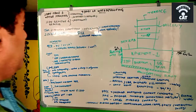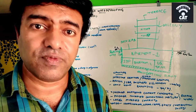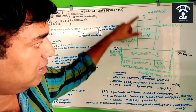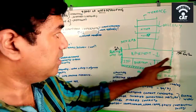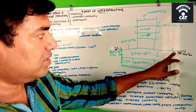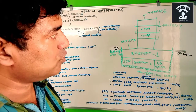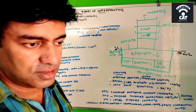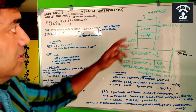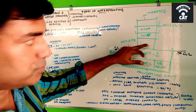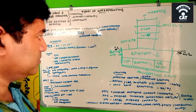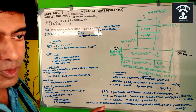Waterproofing treatment depends on the location where it is applied. Consider a building with a tower, deck, ground level, basement one, basement two, a sewage treatment plant, an underground tank, a retaining wall, and a raft foundation. Different waterproofing materials are used at different locations — the material for deck and terrace differs from that for kitchen, toilet, balcony, and basement areas.